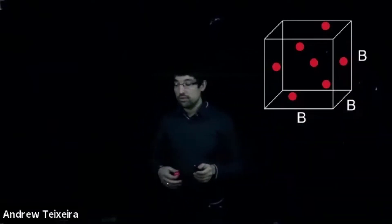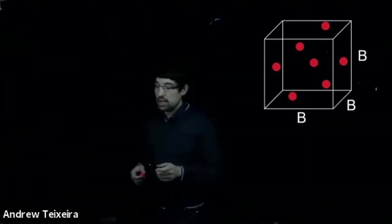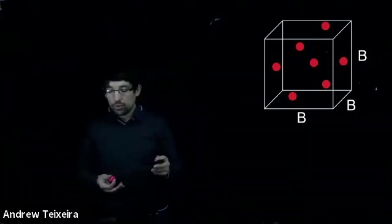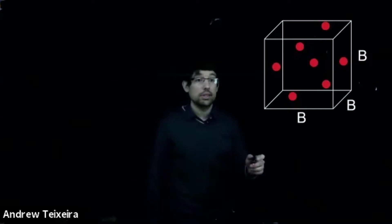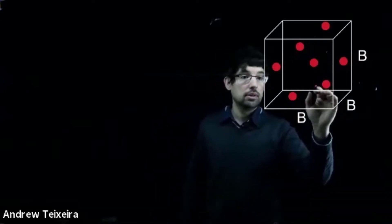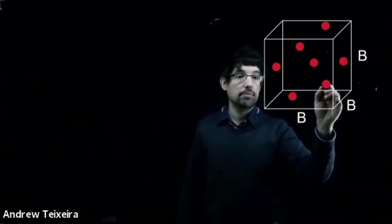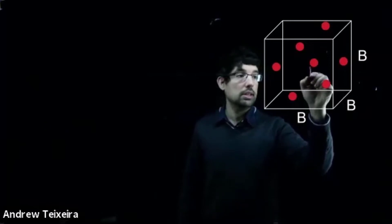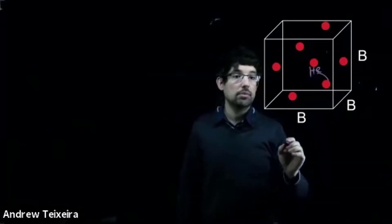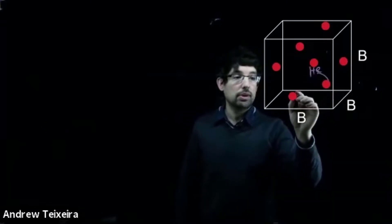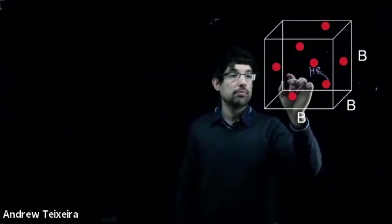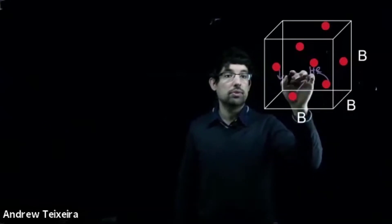And inside that box, we put all of these little particles inside it. Each one of these particles, they're atoms—helium atoms—and they're all moving with a particular velocity in any which direction.